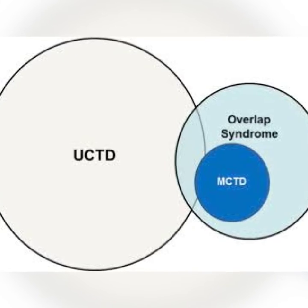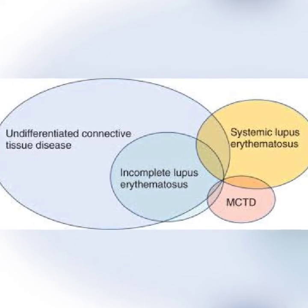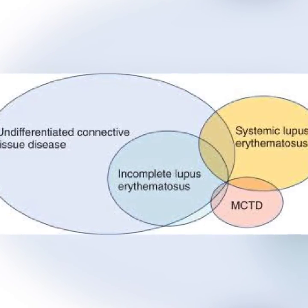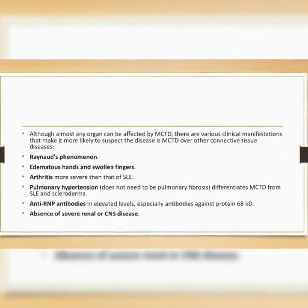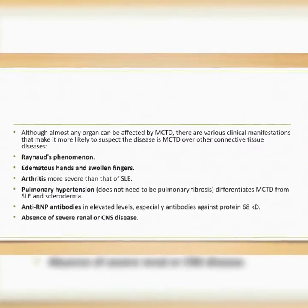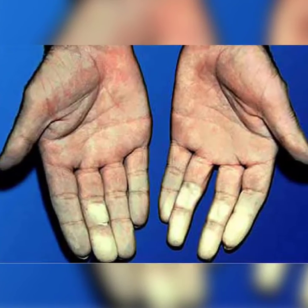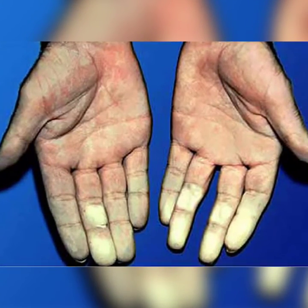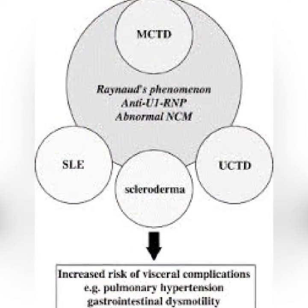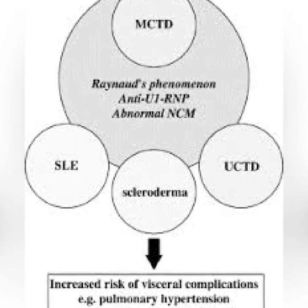Although almost any organ can be affected by Mixed Connective Tissue Disorder, there are various clinical manifestations that make it more likely to suspect MCTD over other connective tissue diseases: Raynaud's phenomenon, edematous hands and swollen fingers, arthritis more severe than that of SLE, and pulmonary hypertension — which differentiates MCTD from SLE and scleroderma. Anti-RNP antibodies in elevated levels, especially antibodies against protein 68KD, and absence of severe renal or CNS disease are also characteristic.